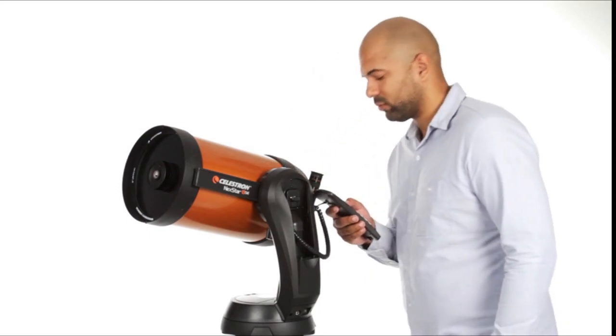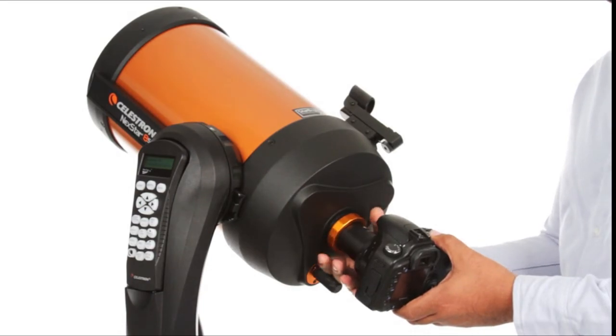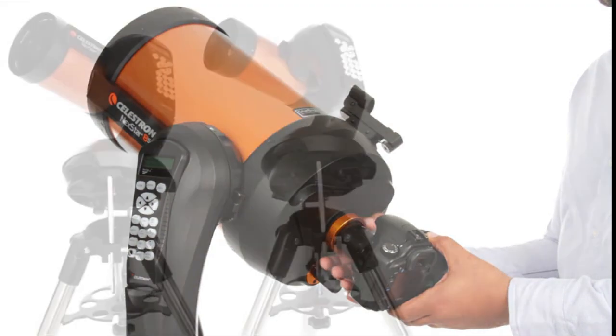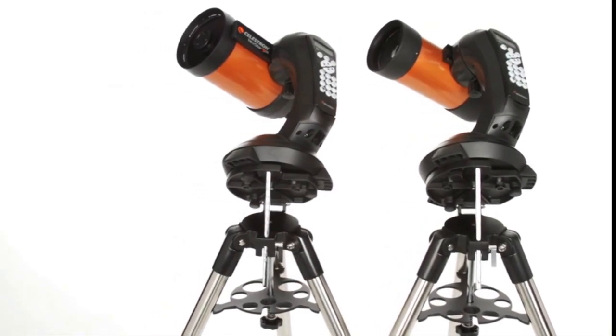You can even get started in astrophotography with your Nexstar SE. Just attach any Celestron planetary camera or your DSLR. The 4 and 5-inch models also include a wedge for long-exposure photography.